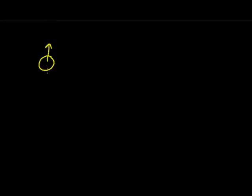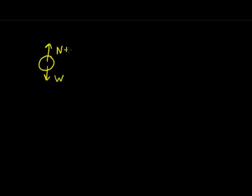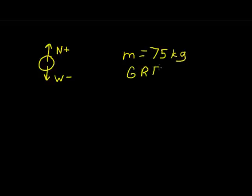We have a man walking, and the ground reaction force is acting upward on his body, represented in newtons, while his weight is acting downward on the system, represented by W. We will make the upward force positive and the downward force negative for this problem. His mass is 75 kilograms and the ground reaction force is 680 newtons. The question asks for acceleration in the vertical direction.